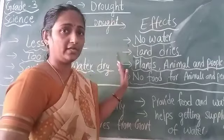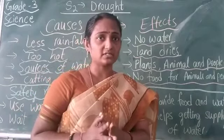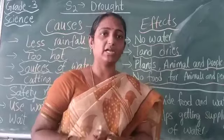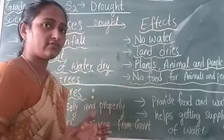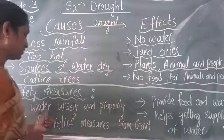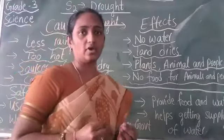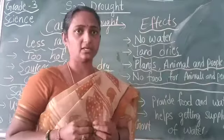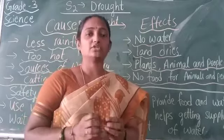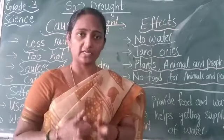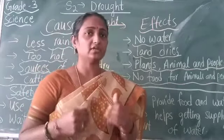Natural disasters cannot be completely prevented, but we can follow some safety measures. The first safety measure is to use water wisely and properly. When there is little rainfall, we should not waste water — we should use it wisely so that we can save it for future use.